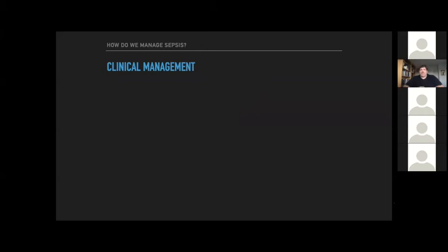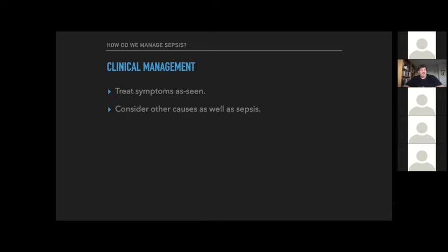In terms of clinical management: treat what you've got, treat symptoms as you see them, and make sure you consider other causes as well as sepsis. In the middle of July, the patient who walks in with a temperature of 38.5 degrees, a heart rate of 100, and a blood pressure of 90 over 60 — we need to be able to differentiate: is this likely a hyperthermic patient with environmental hyperthermia, or is this possibly a septic patient? That's when our history-taking and ability to determine if there's a likely locus of infection becomes really important.